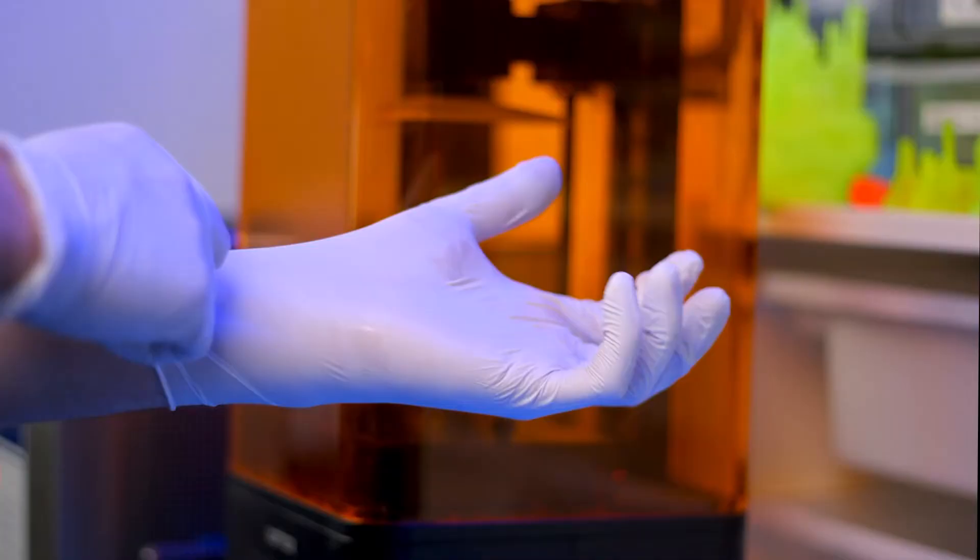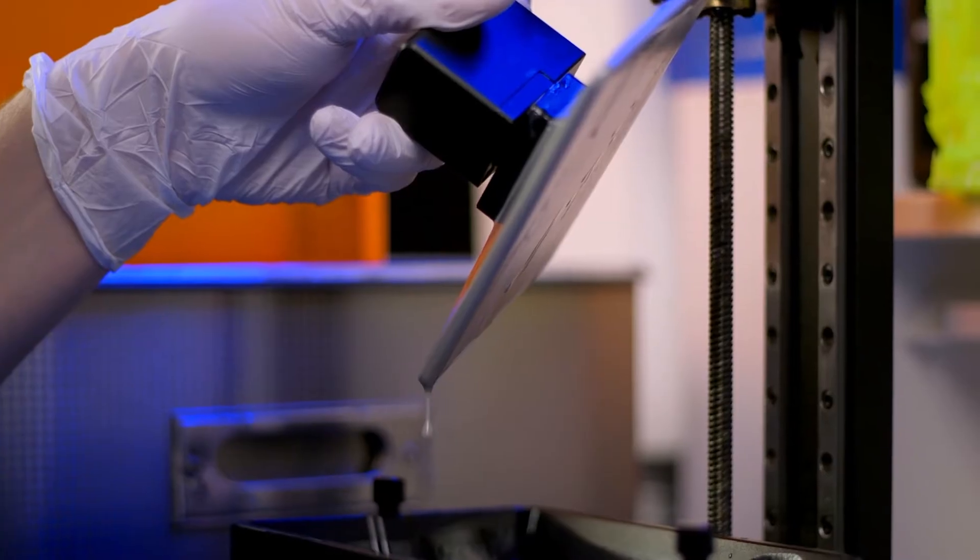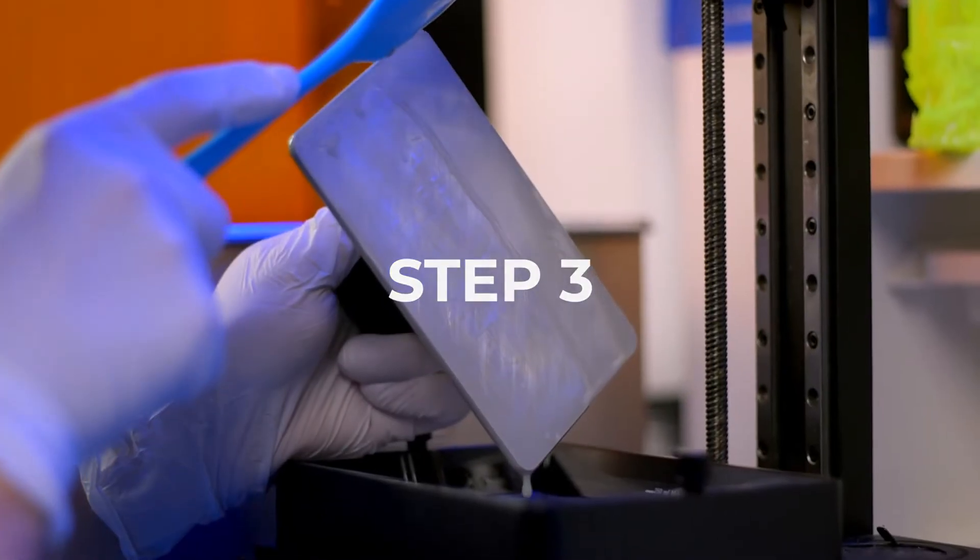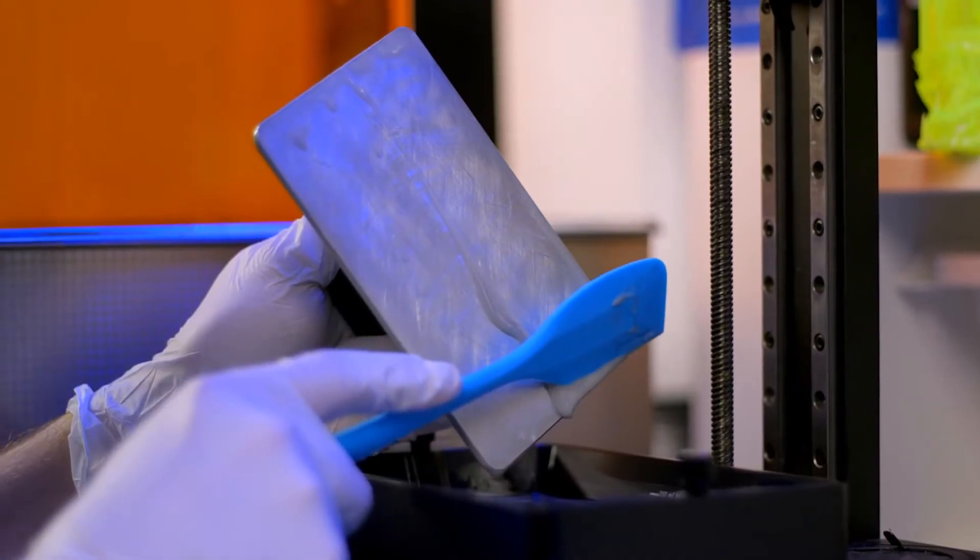Step 1: Don the protective equipment and prepare your workstation. Step 2: Remove the build plate from its mount while keeping it above the vat to catch any drips. Step 3: Use the rubber squeegee to remove as much resin as possible from the build plate into the vat.